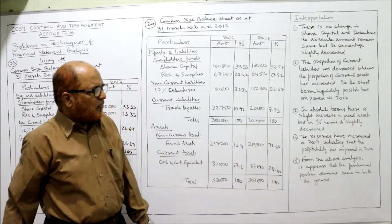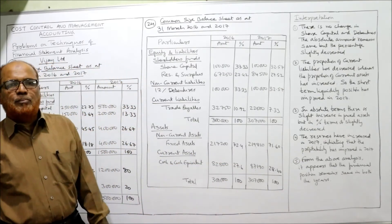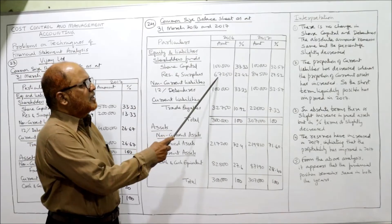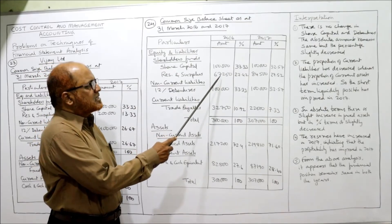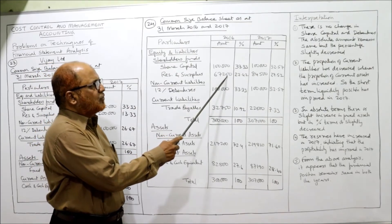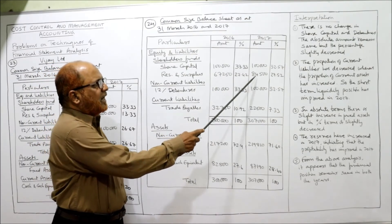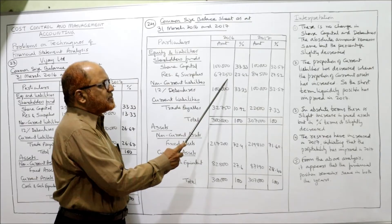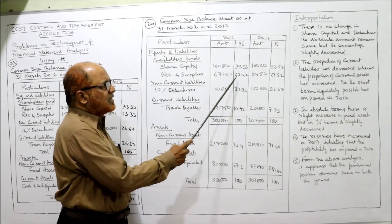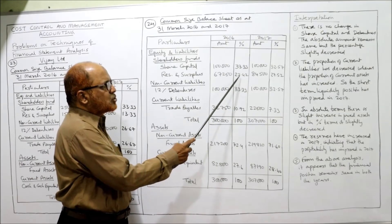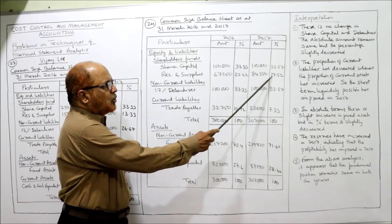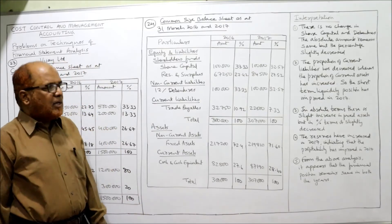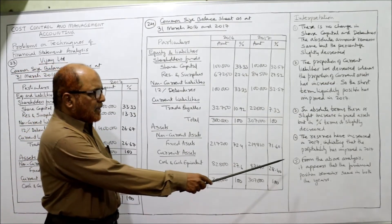The next point: reserves have increased in 2017, indicating that profitability has improved. If you compare the reserves: it is 67,250 last year and 84,005 in current year. In absolute terms it has increased, and the percentage has also increased — from 22.42% to 27.5%.